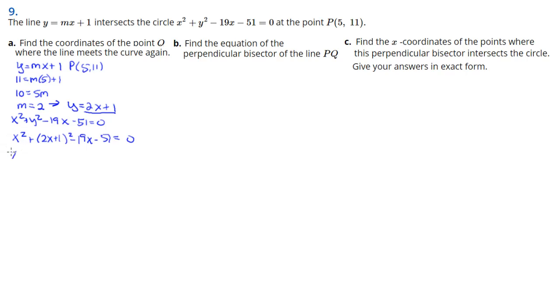Now I've got to expand this. That's going to be 4x squared plus 4x plus 1 minus 19x minus 51. Combining like terms, I get 5x squared minus 15x minus 50 equals 0. This all divides by 5, so I have x squared minus 3x minus 10 equals 0. I can factor this and get x equals 5 and x equals negative 2.